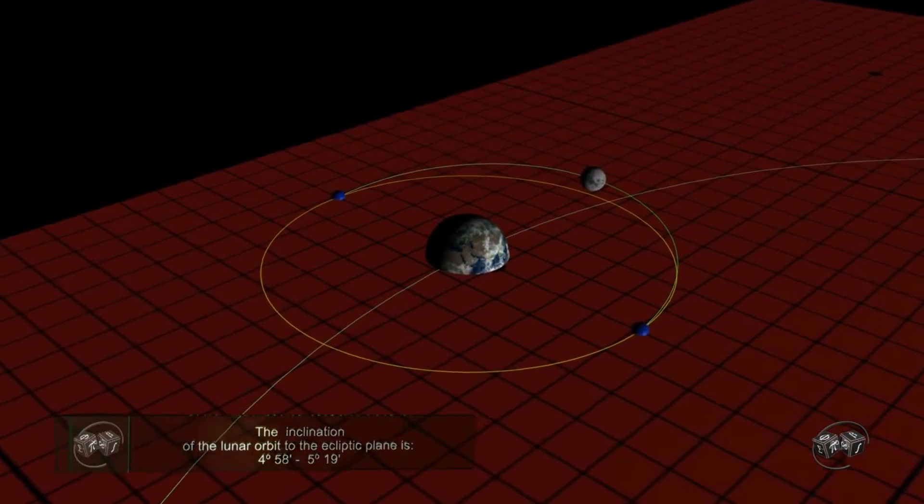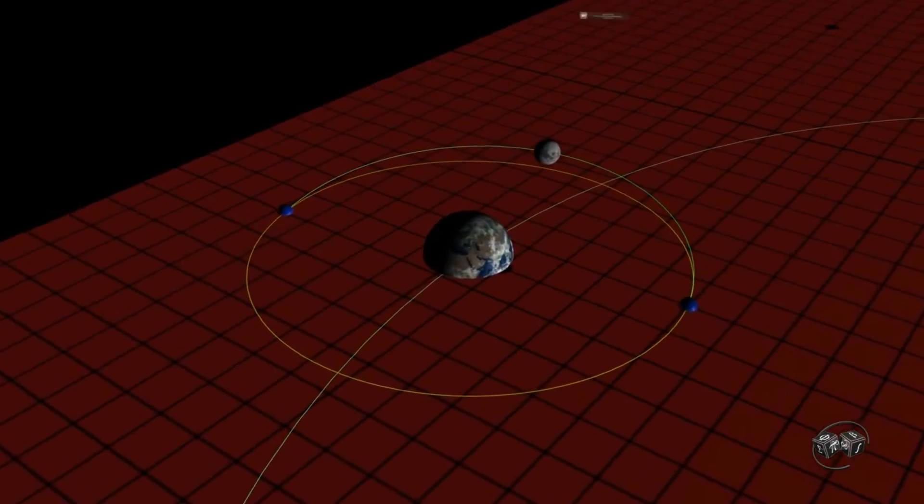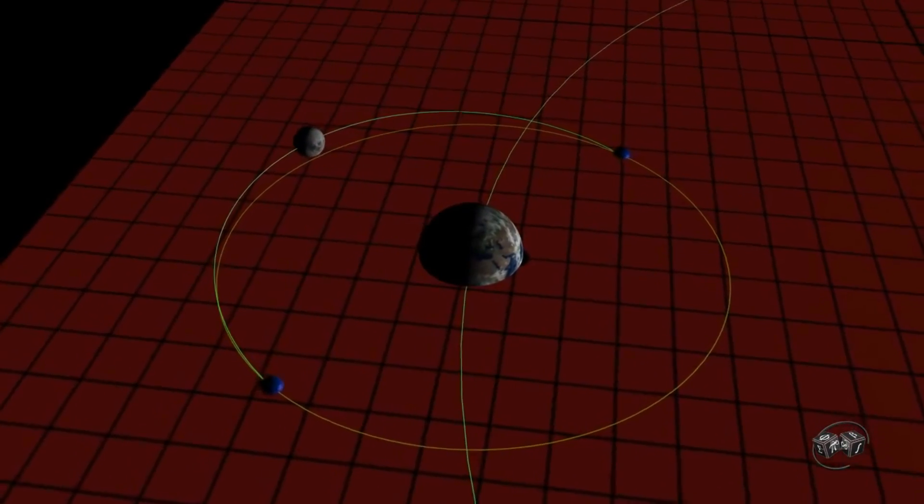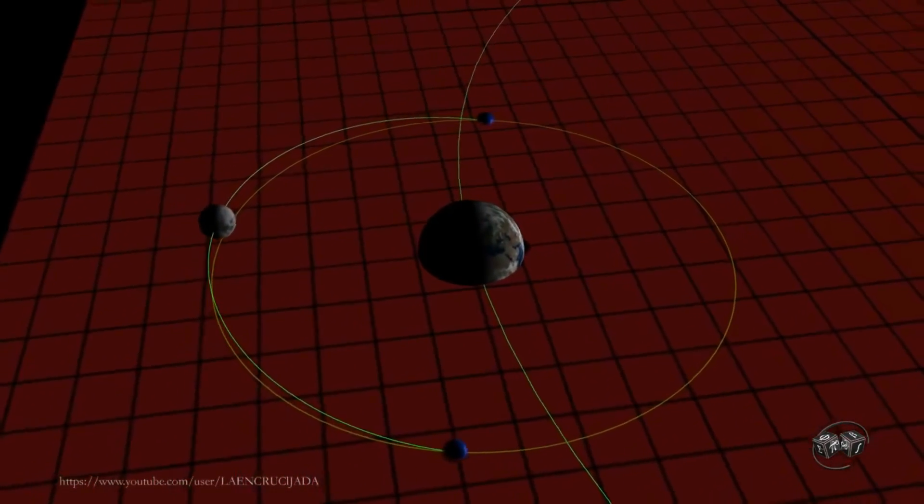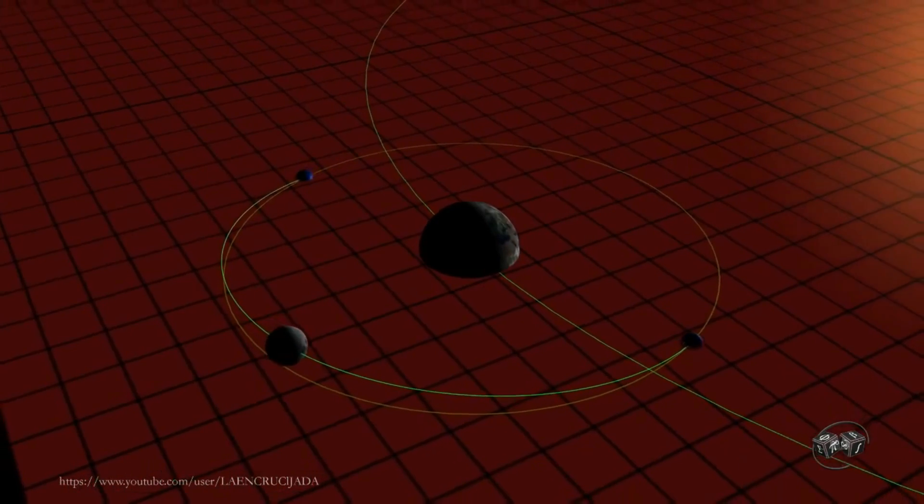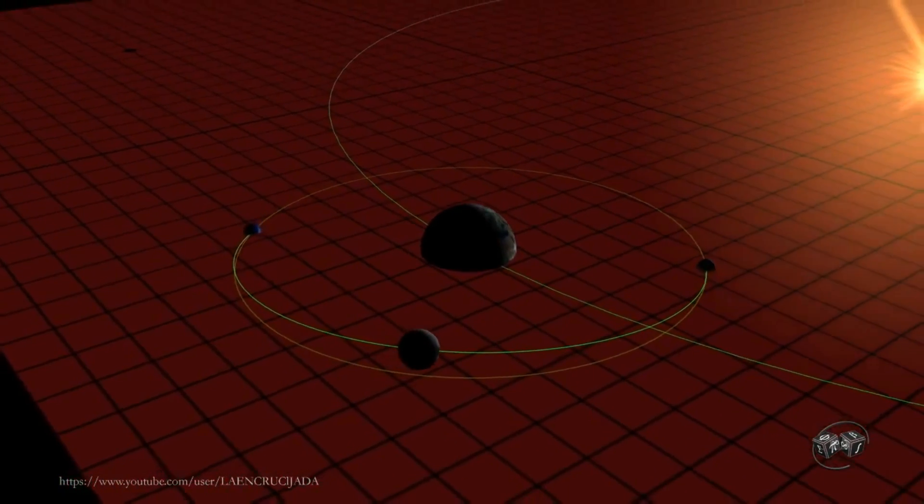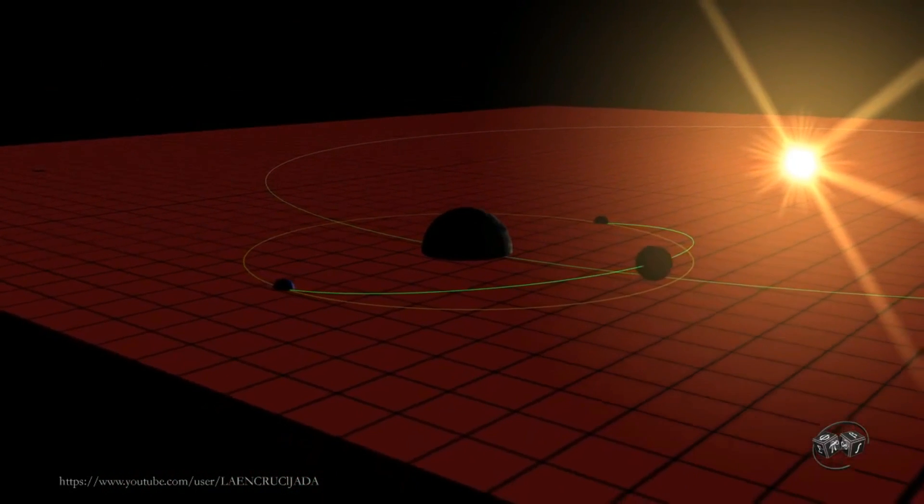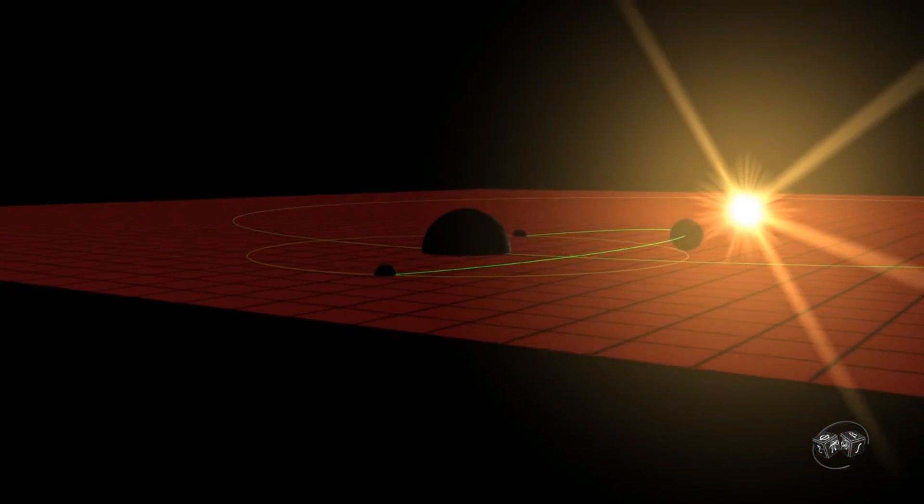The nodes are points at which the Moon's orbit crosses the ecliptic. Nodes are represented as blue dots. The line of nodes, the intersection between the two respective planes, has a retrograde motion for an observer on Earth that rotates westward along the ecliptic with a period of 18.60 years, or 19.3549 degrees per year.